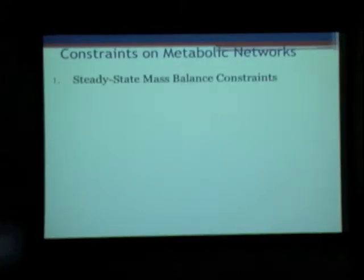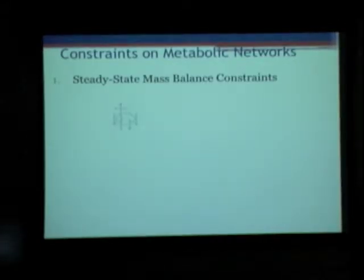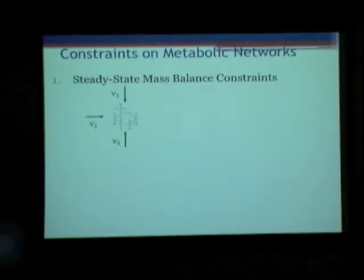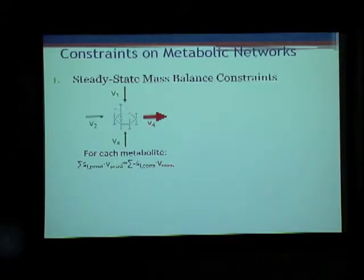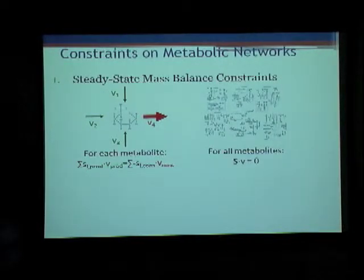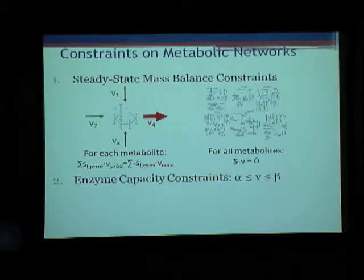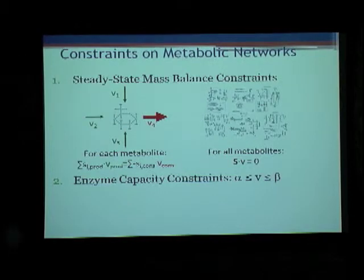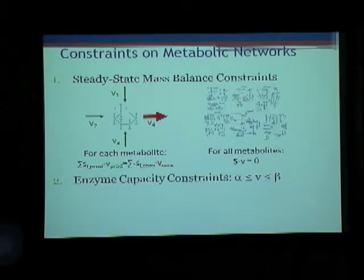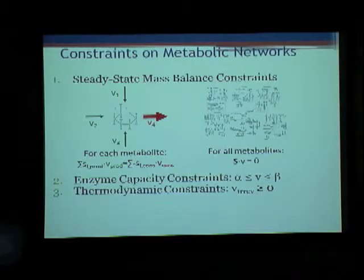What type of constraints would be placed on metabolic networks? The first constraint is a steady state mass balance constraint, placed on all metabolic networks because we analyze these networks in the steady state. Suppose we have a metabolite generated through fluxes B1, B2, and B3, and a flux B4 that consumes it — the amount generated should equal the amount consumed. That is our mass balance constraint. The second type is an enzyme capacity constraint, where we limit the flux within bounds alpha and beta as lower and upper bounds. The third type is a thermodynamic constraint, in which we fix the fluxes of all irreversible reactions to be greater than zero.